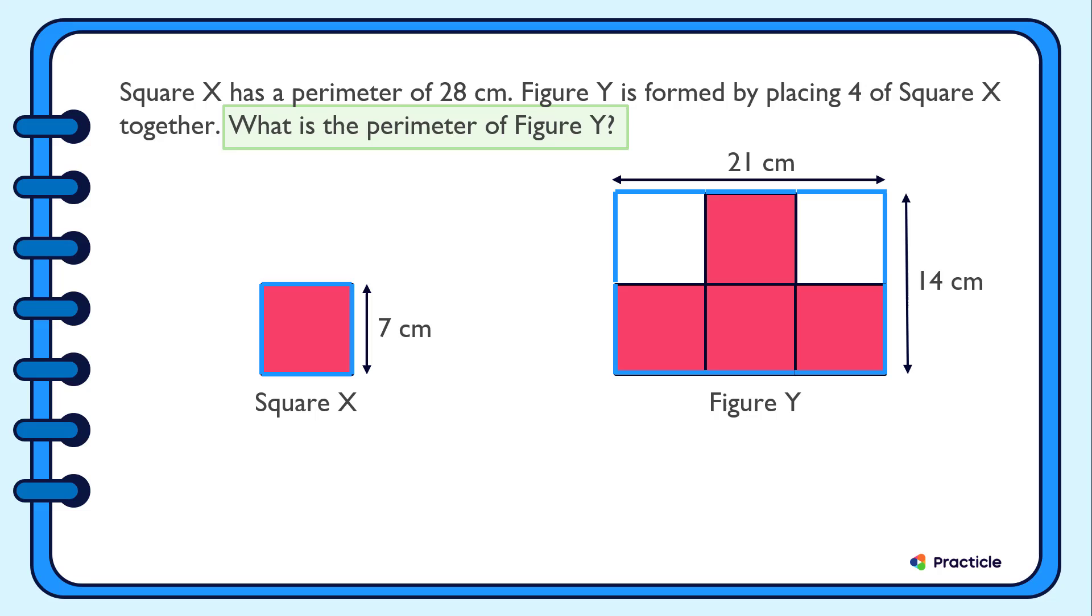So another way to solve this is to add 21 cm to 14 cm to 21 cm and another 14 cm. When we add all these numbers together, we are also going to get a total of 70 cm. Which method do you prefer?